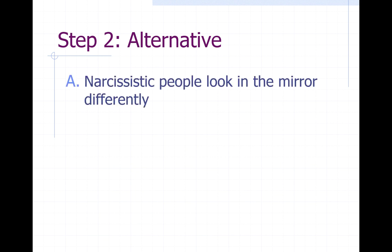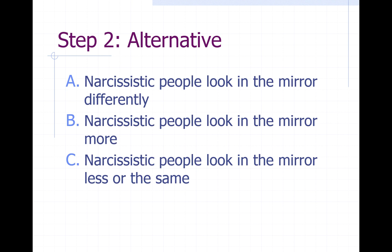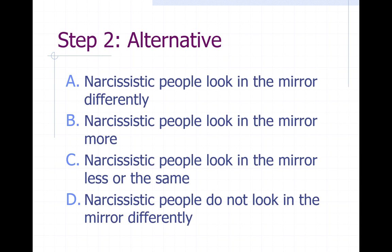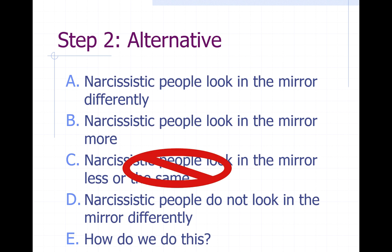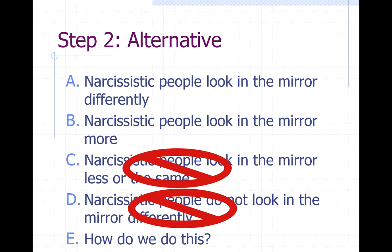Now, which one works as the alternative hypothesis? We can cross off C right away because it contains the word 'the same,' which can never appear in an alternative hypothesis — that only works for a null. We can also cross off D, 'do not look in the mirror differently,' because that also implies they're the same. That narrows it to A or B, and in this case we choose B: narcissistic people look in the mirror more.